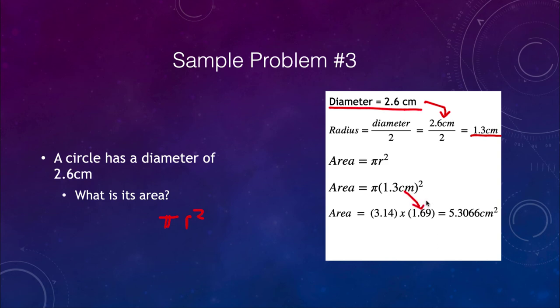And the 1.3 squared is 1.69. So when we square that, we put the value in for pi. When we multiply those two, we get 5.3066 centimeters squared.